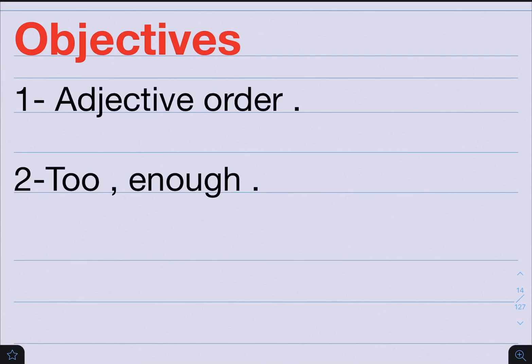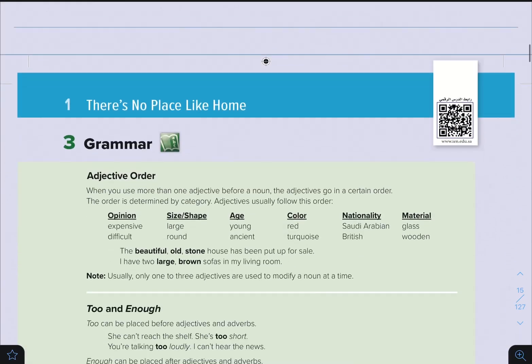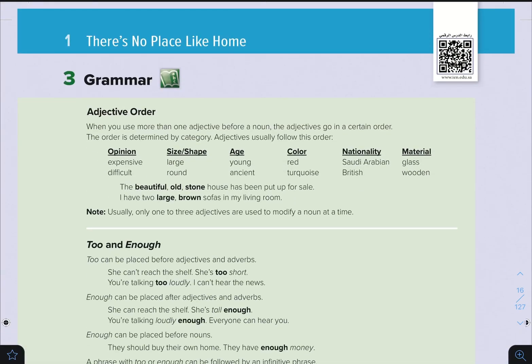We will talk about adjective order, and then we will talk about too and enough. Right now, please move on to pages number 8 and 9, and please follow up with me as I explain this lesson. We will be looking at Unit 3 Grammar. Just a reminder, this unit is called There is No Place Like Home.